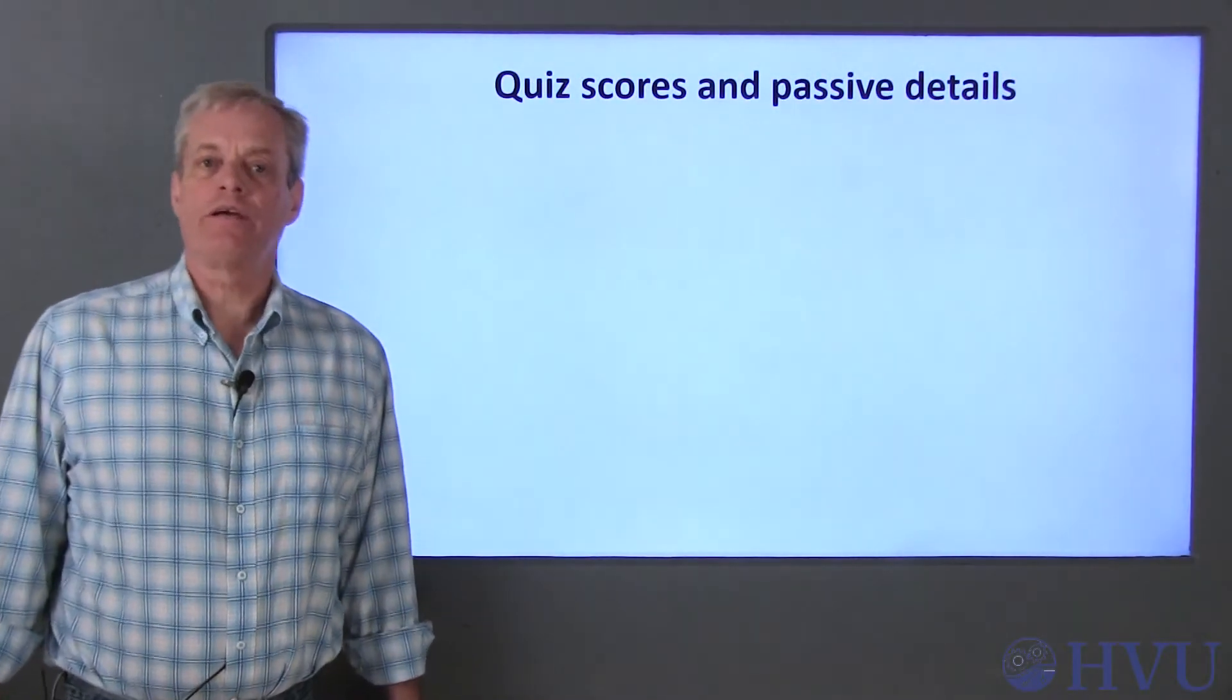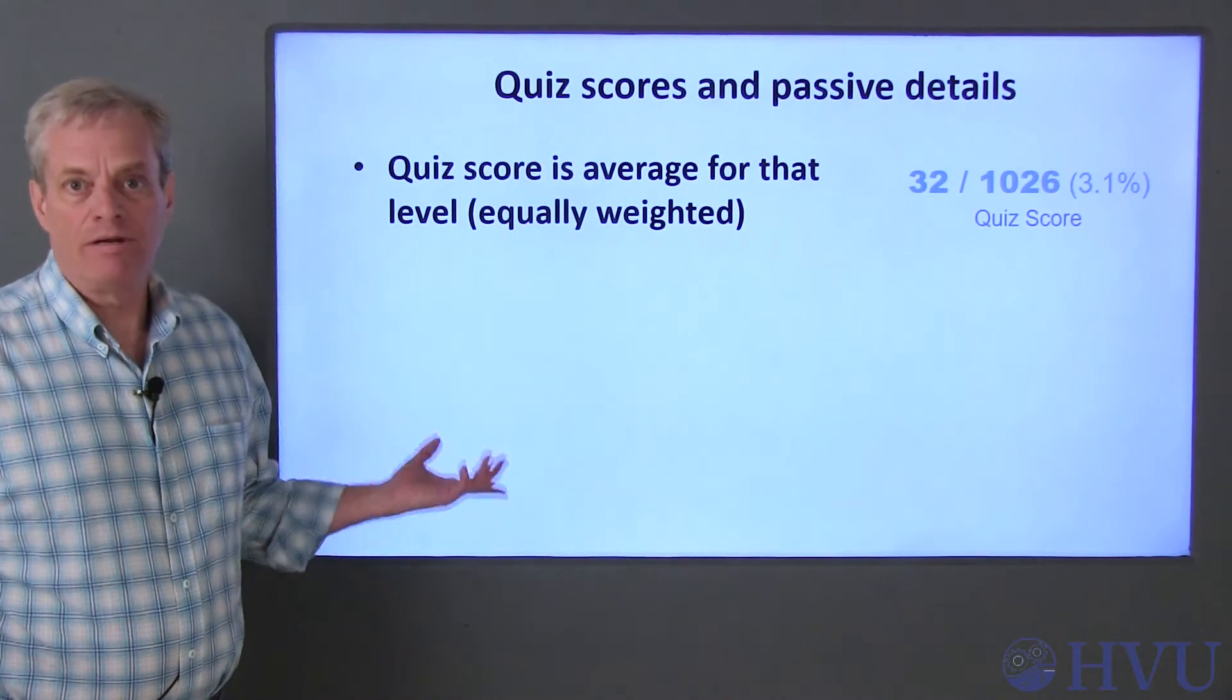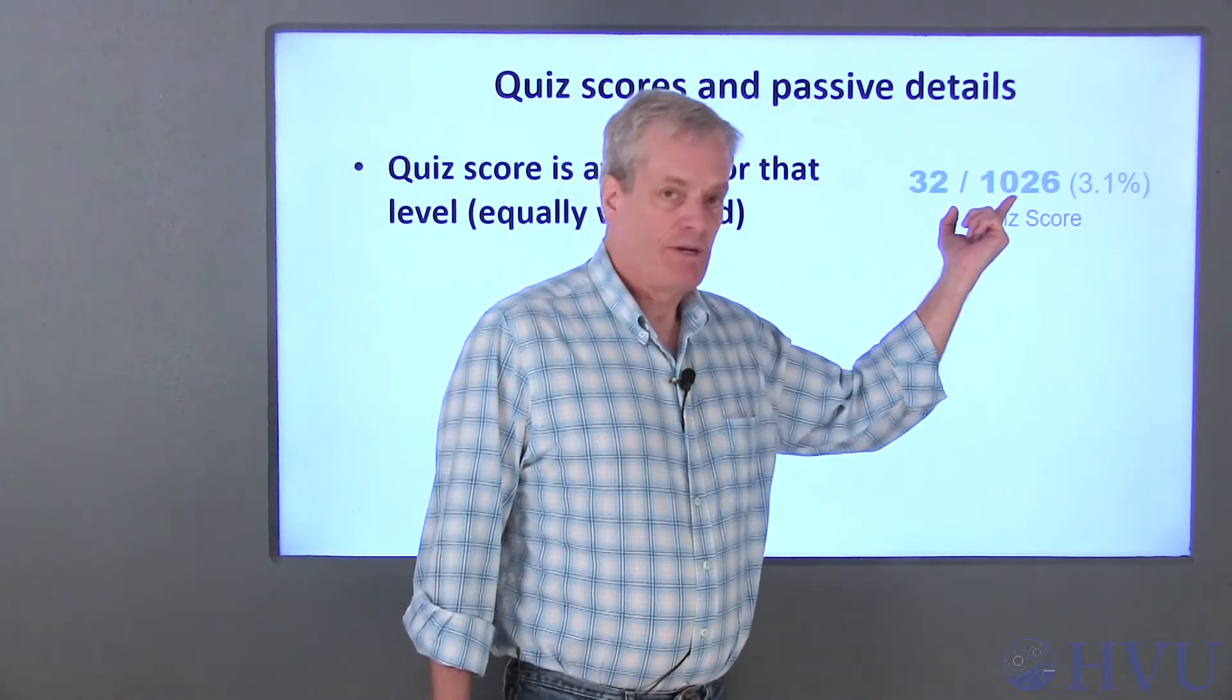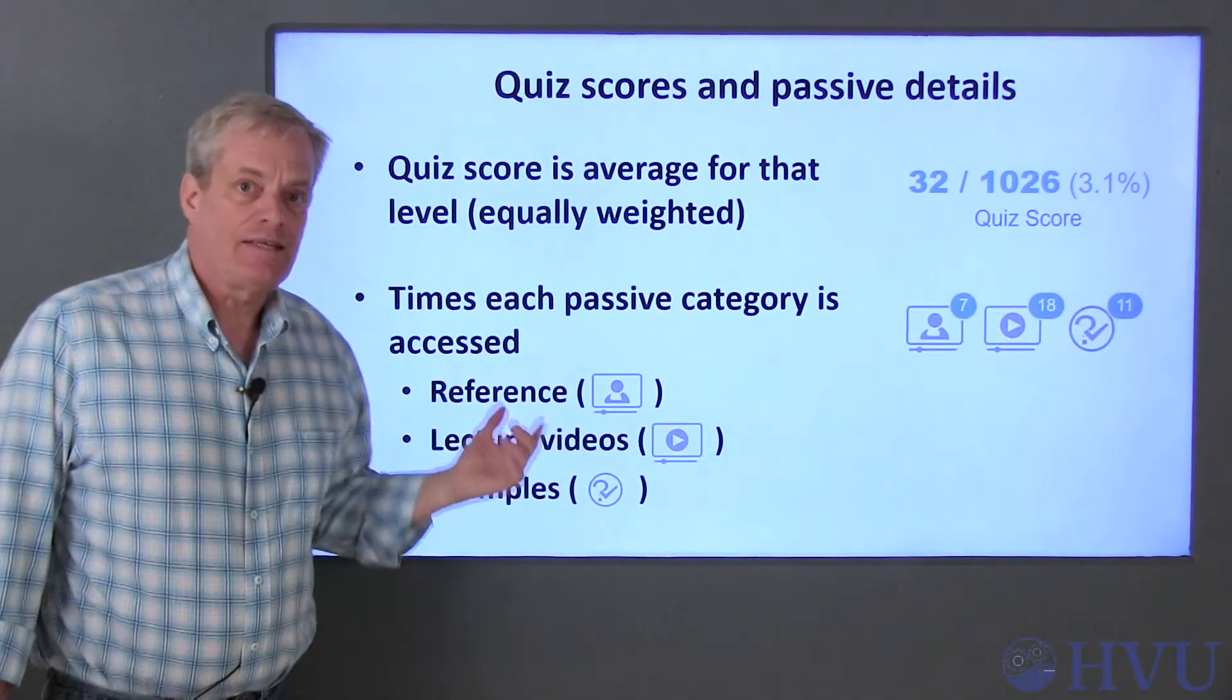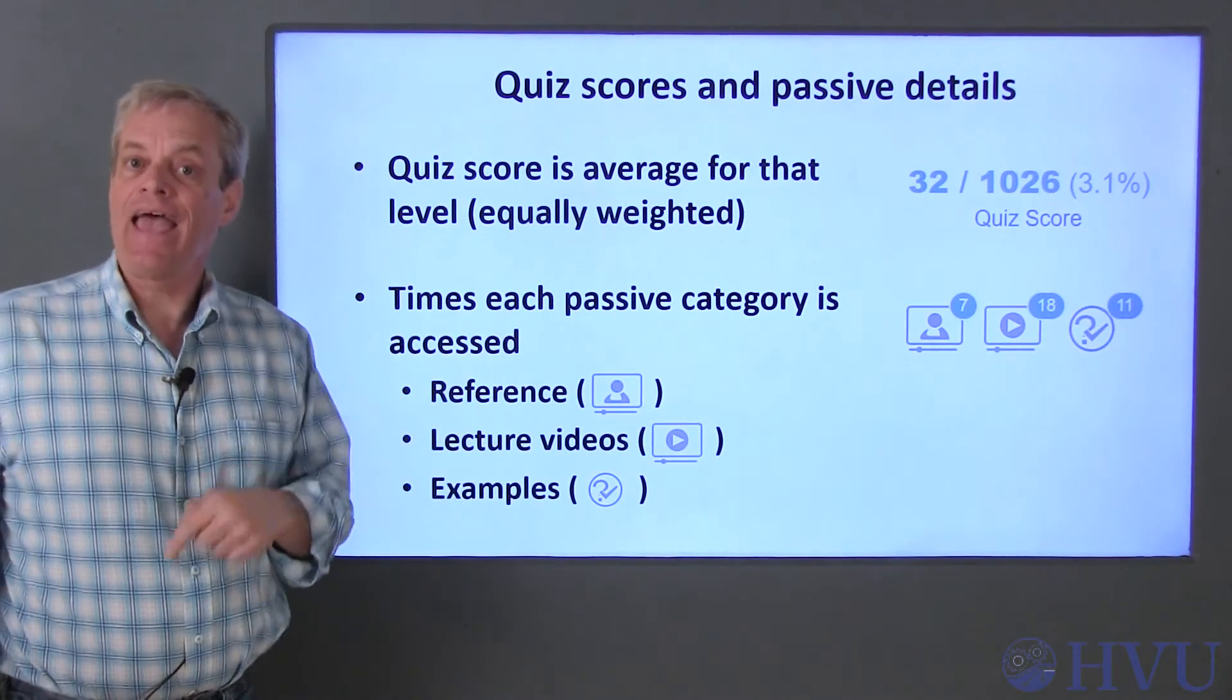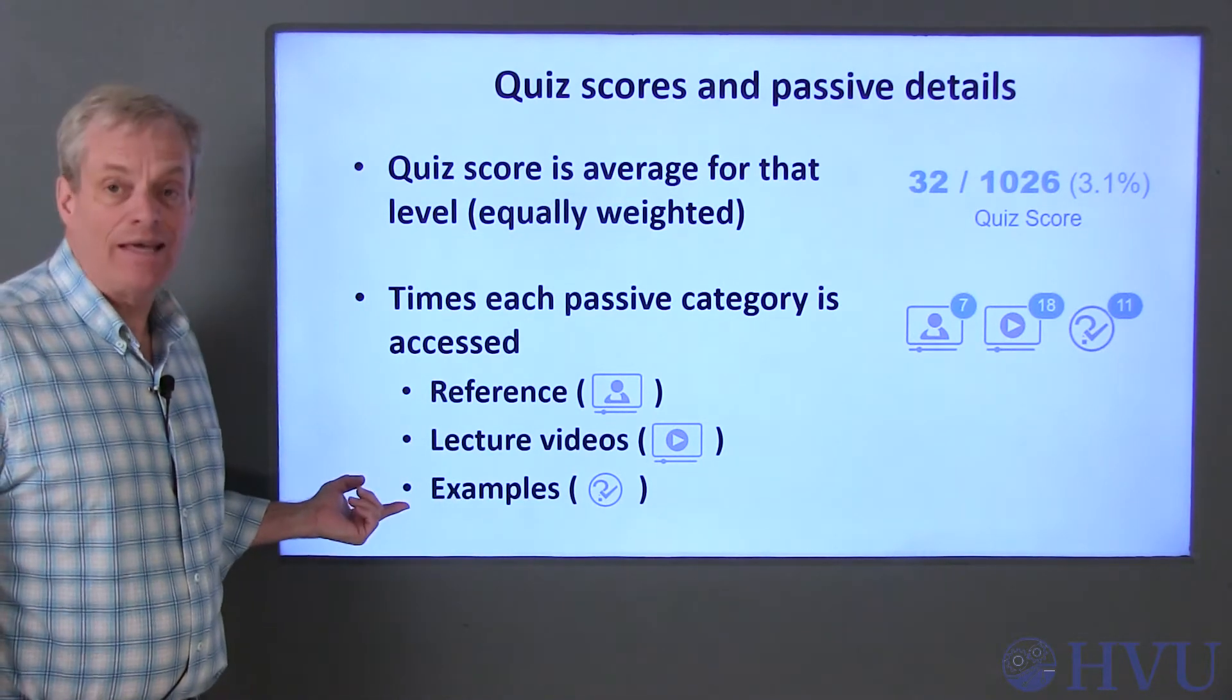Finally, let's take a quick look at the quiz and detailed passive materials metrics. The quiz scores are straightforward. They consist of the quiz points awarded and the total number of quiz points in that unit or lesson. This is also expressed as a percentage. These icons show the total number of times a student has accessed that category of passive materials. Passive materials consist of reference materials, lecture videos, and examples.